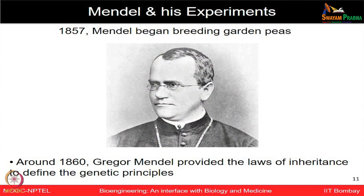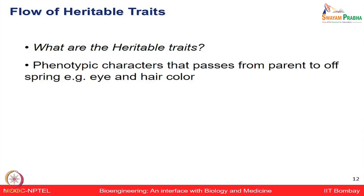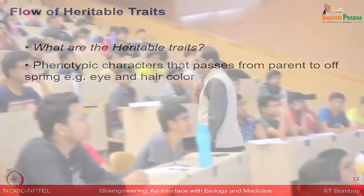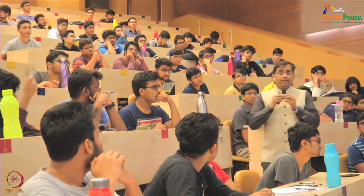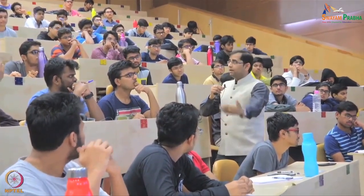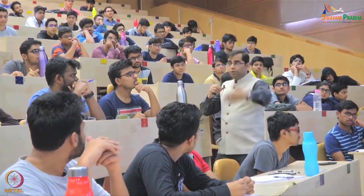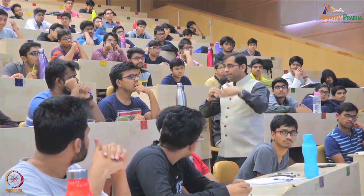In 1860, he was able to come up with the law of inheritance to define genetic principles. Heritable traits include things like eye colors and hair patterns. To choose true breeding varieties, you cross purple with purple over multiple generations. If you are still getting purple-colored progenies that are not segregating, those are true breeding — you are ensuring they are homozygous for that characteristic.